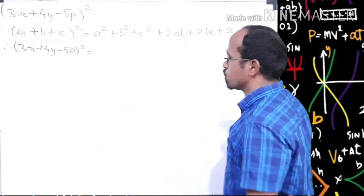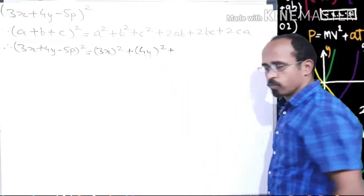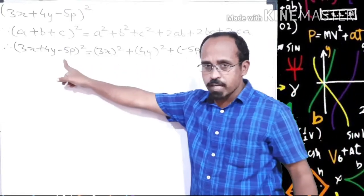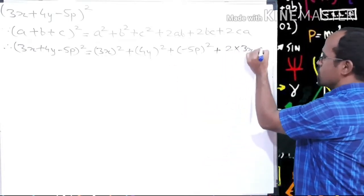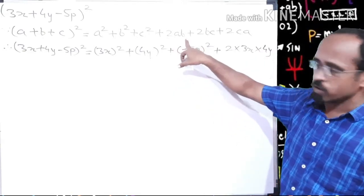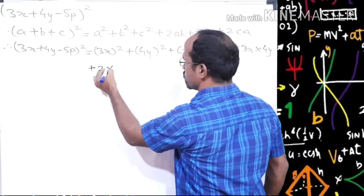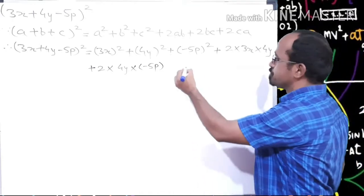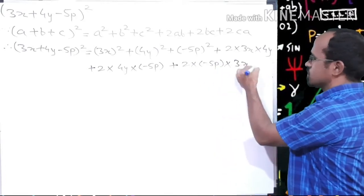Let's replace them: a² is (3x)², plus b² is (4y)², plus c² is (−5p)² — here we have to find the square of minus 5p. Then plus 2ab means 2 multiplied by 3x multiplied by 4y. Then plus 2bc is 2 into 4y into (−5p), and plus 2ca is 2 into (−5p) into 3x.